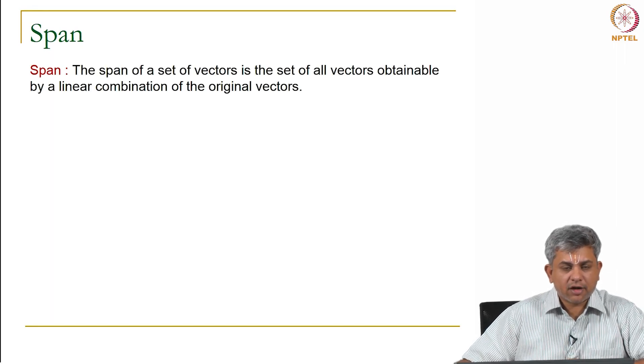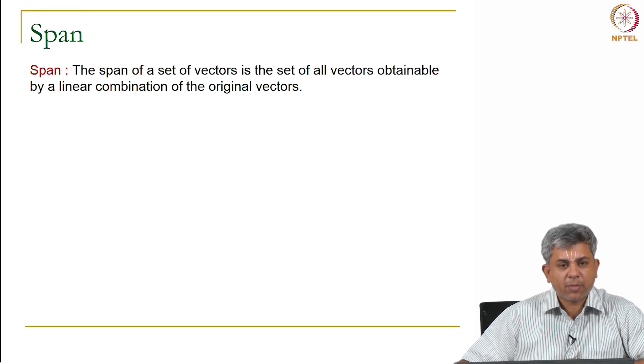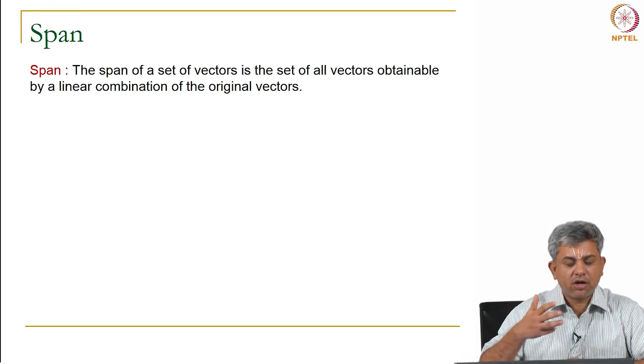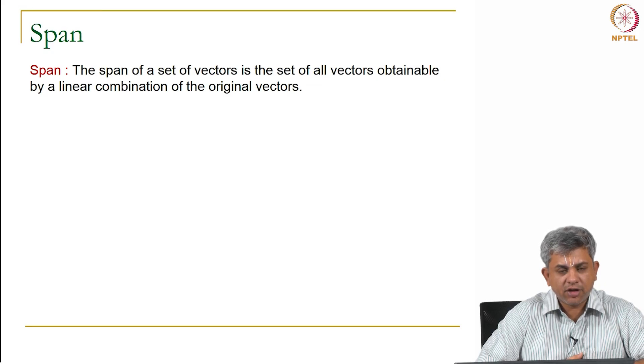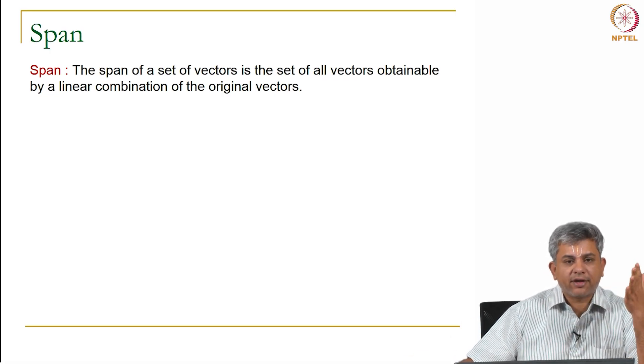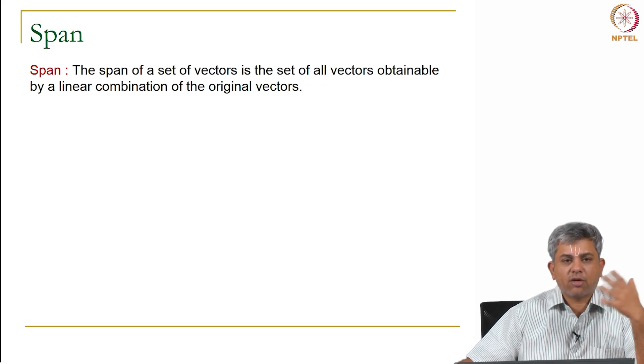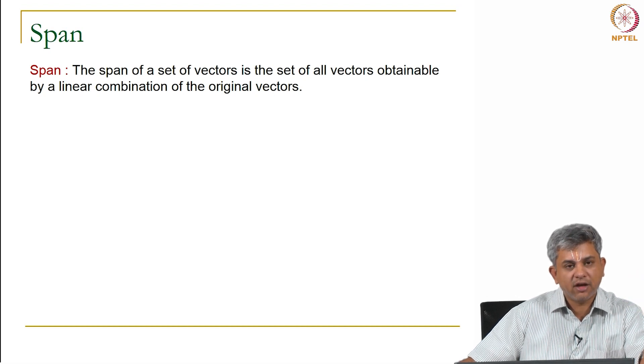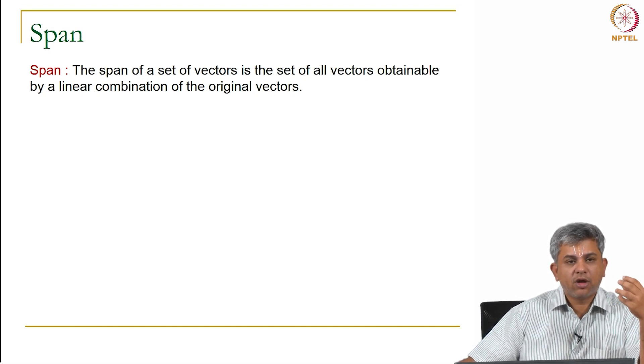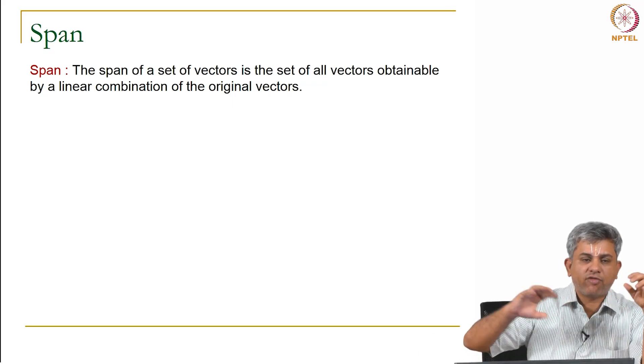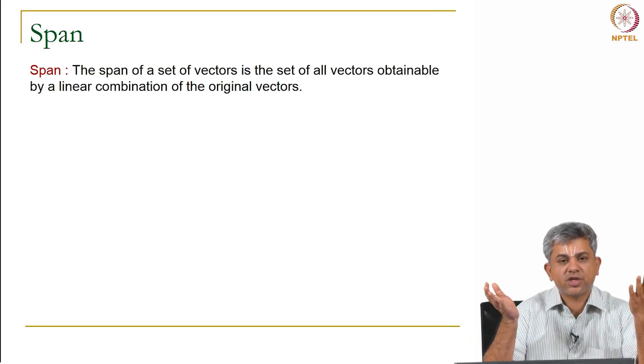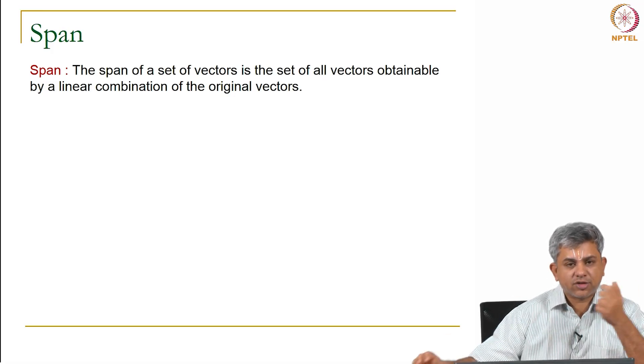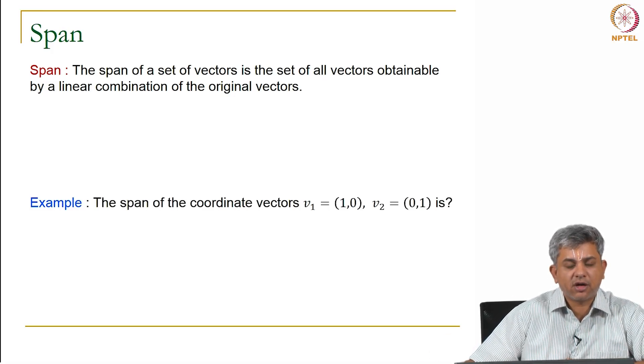The second idea we want to discuss is the idea of span. It's a natural outgrowth of the idea of linear combination. The span of a set of vectors is whatever you will get by every possible linear combination. If you write α1 and α2 free and find every possible linear combination, that is called a span.